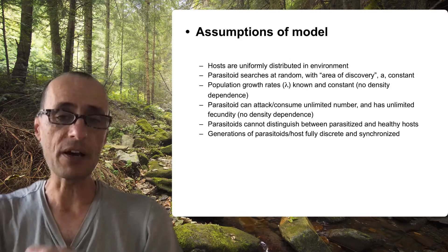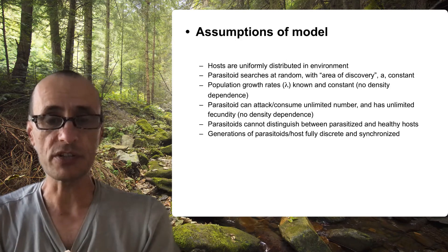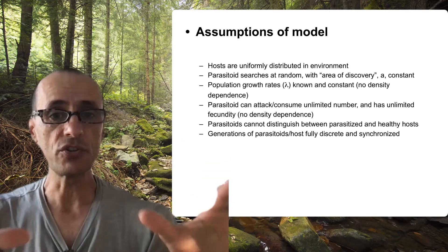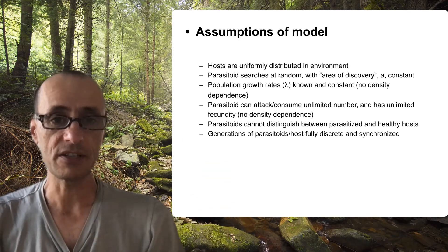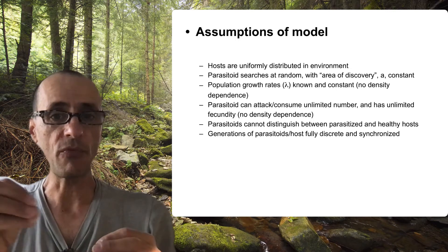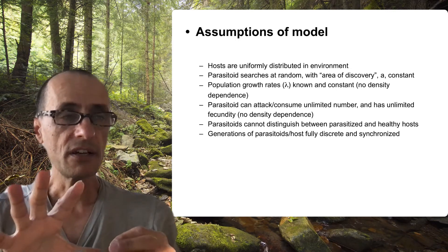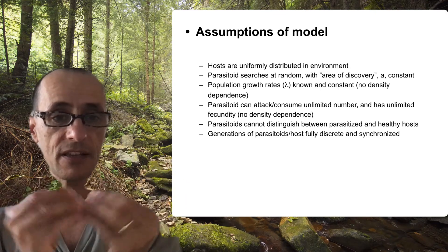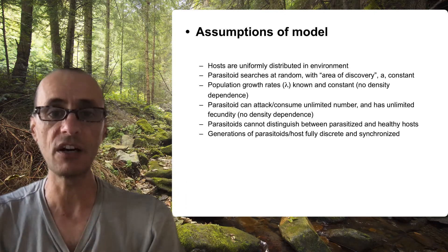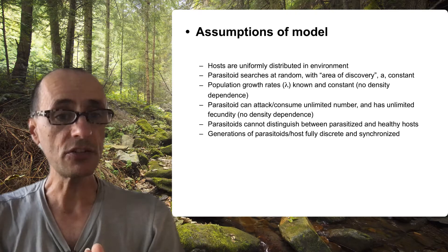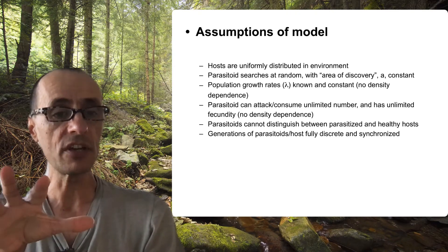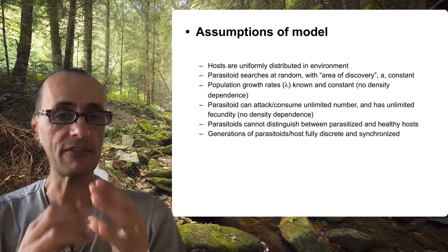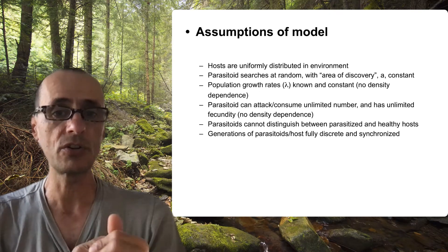This model makes a couple of really simple assumptions. First of all, it assumes that the hosts are uniformly distributed in the environment, that the parasitoid searches at random, and has a certain capacity to discover those hosts. Maybe it's smelling them, maybe it sees them — a variety of different things — and that area of discovery is fixed. It doesn't get bigger, it doesn't get smaller, it doesn't have the capacity to learn or anything like that.